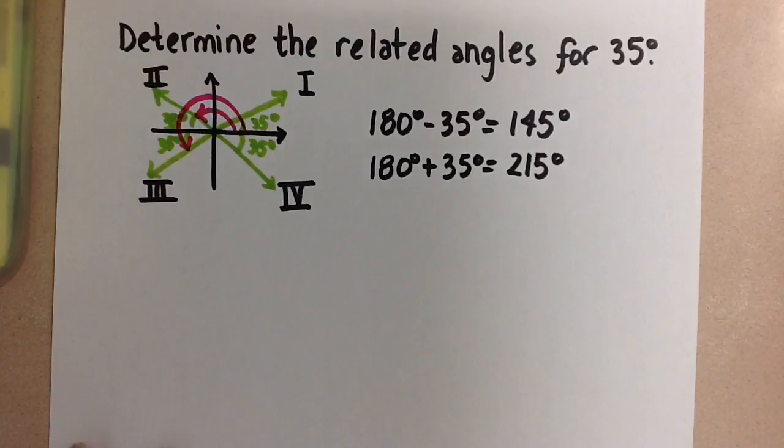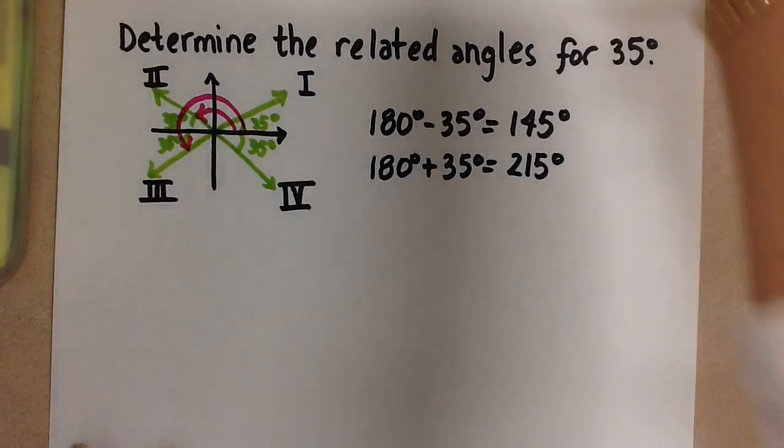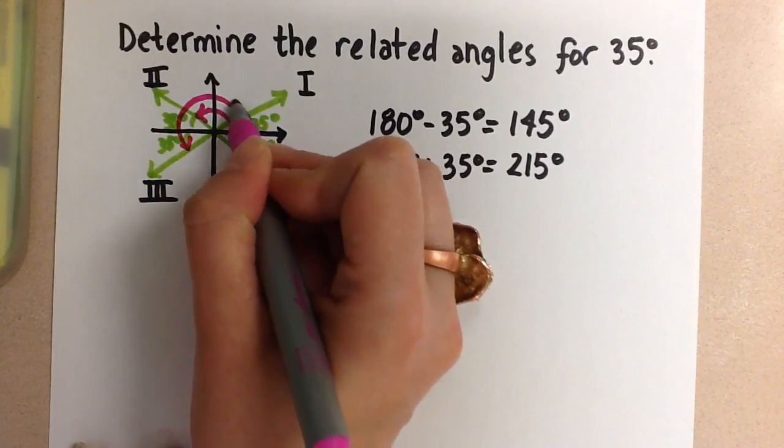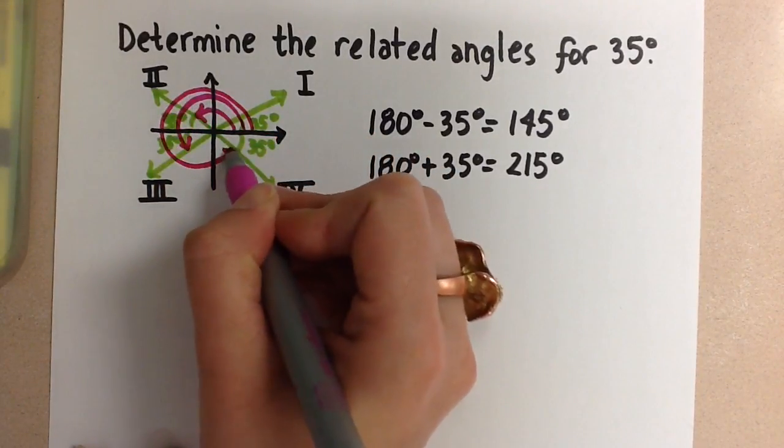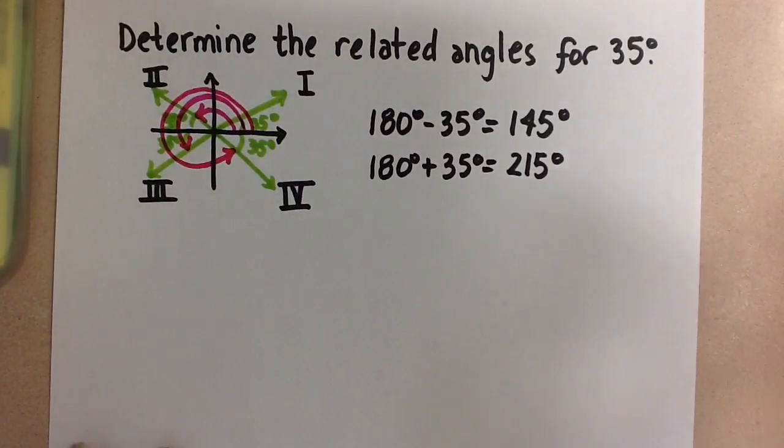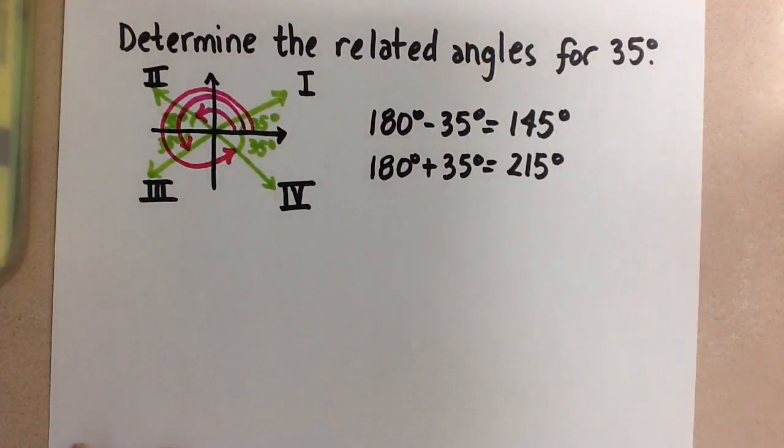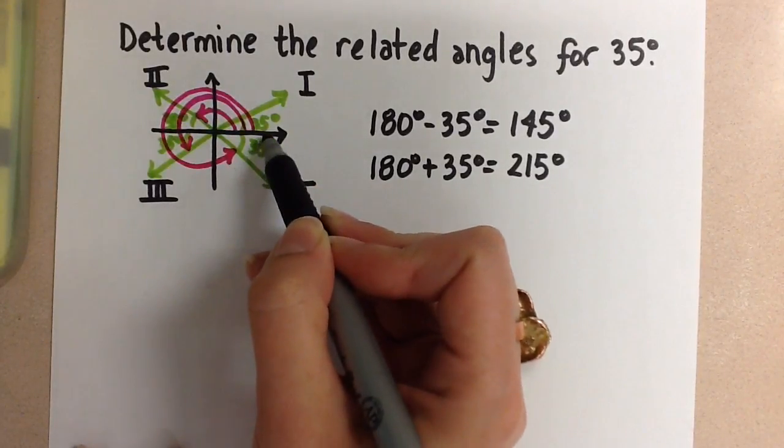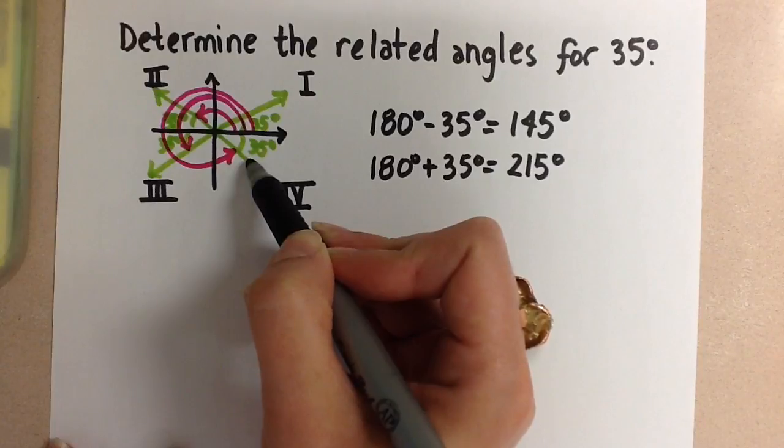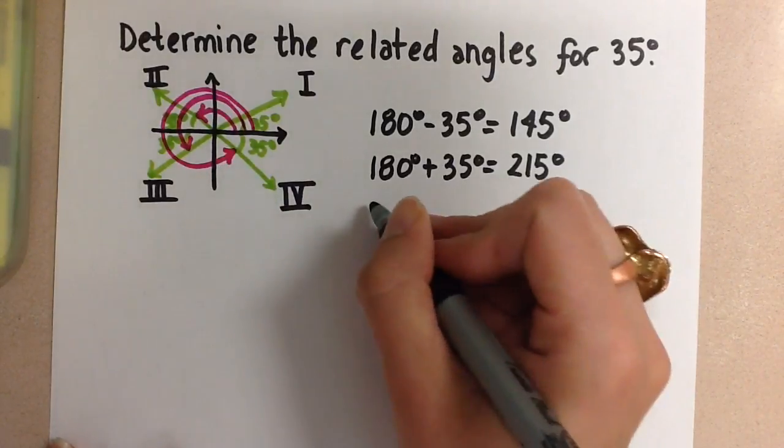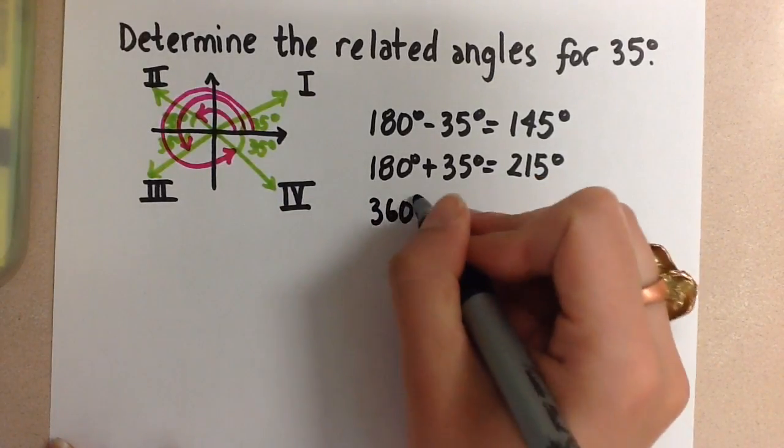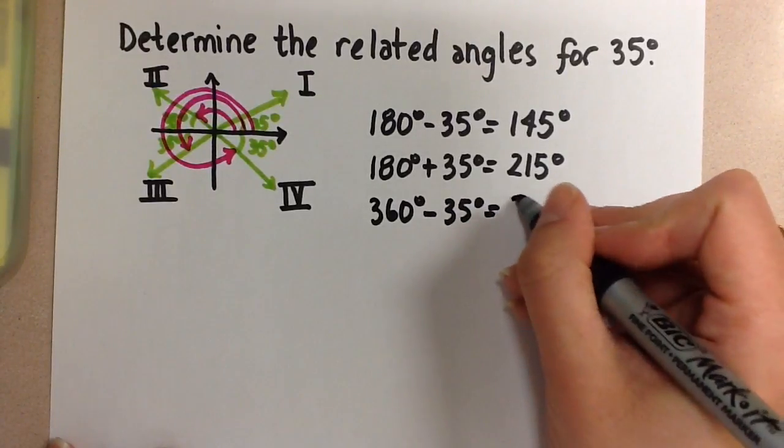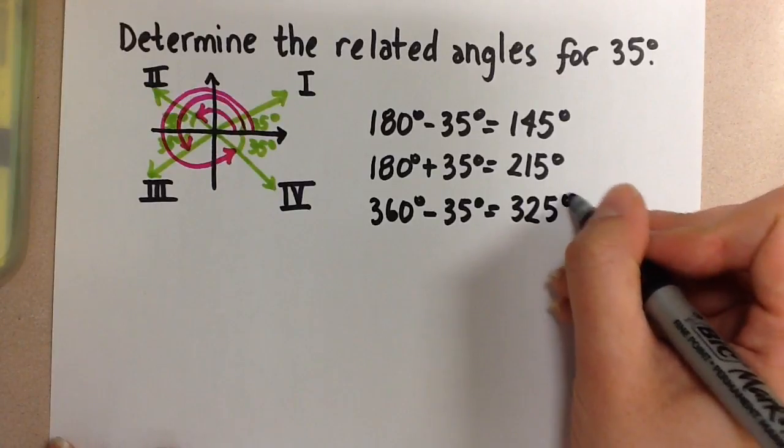And finally, we're going to do it one more time for the angle in the fourth quadrant. So now we're looking at starting at the positive x-axis and going around to this terminal arm right there for that principal angle. And we're going to do 360 degrees, that's the full circle, minus the 35 degrees to get that remaining angle. So 360 degrees minus 35 degrees gives us 325 degrees.